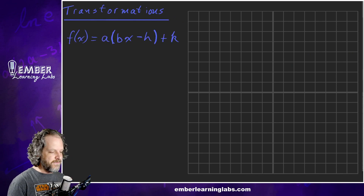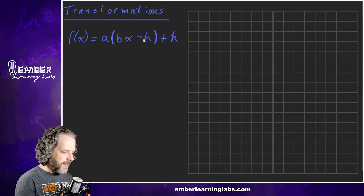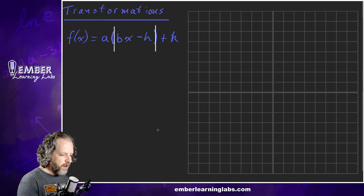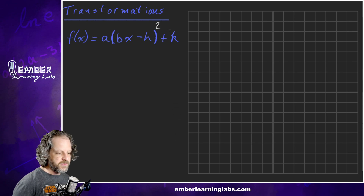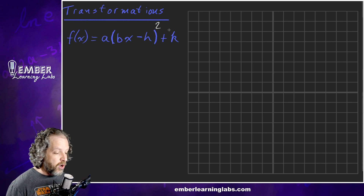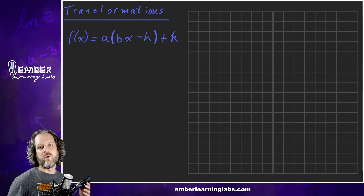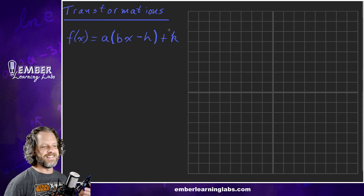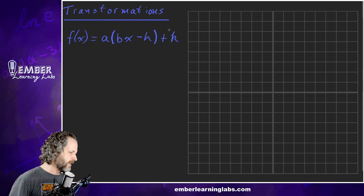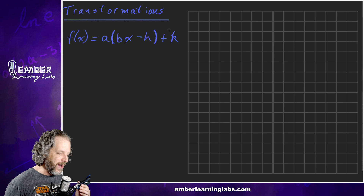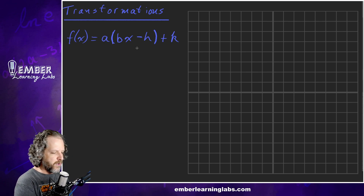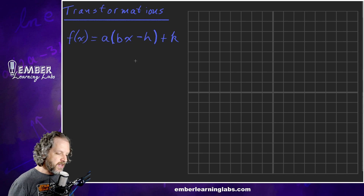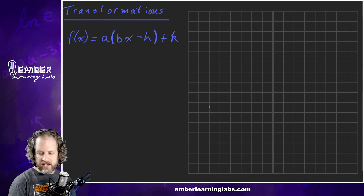When we're transforming a function, this can apply to the absolute value or the squared function — those are the main ones we're going to see. The same transformations also work for linear ones. For the constant function it's a little different because it doesn't have any variables — it can only move up and down. It's less complex, like the single-celled organisms of the parents. So this is kind of the generic form of a parent function, and there are different letters that each do something different.